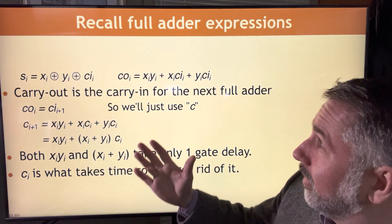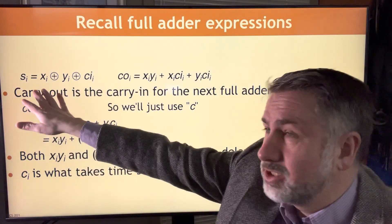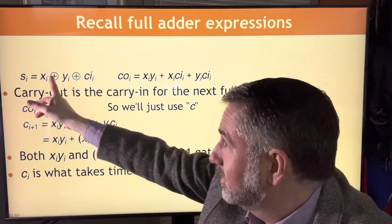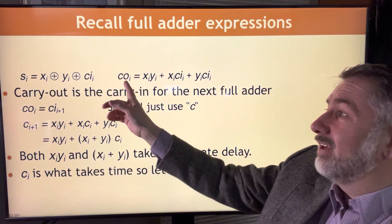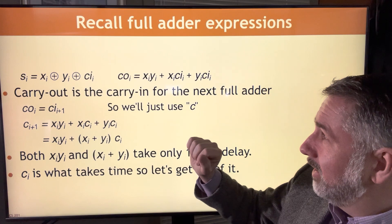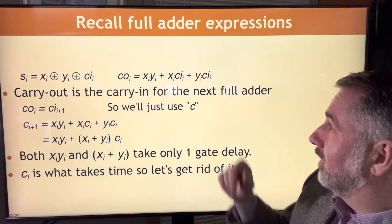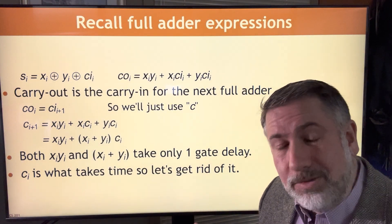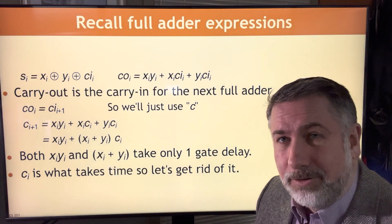We start with the full adder expressions for each bit slice. The sum is just exclusive-OR of all the inputs: x XOR y XOR carry-in. The carry-out is going to be either xi AND yi, or xi AND carry-in, or yi AND carry-in — if any two of those three inputs for the full adder are one, we will have a carry-out.